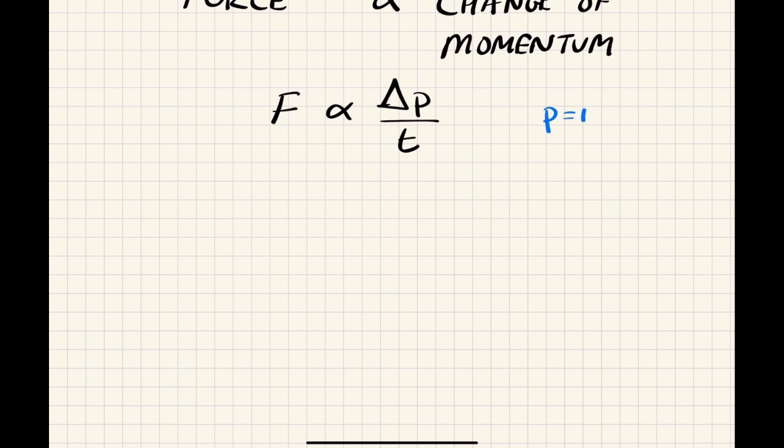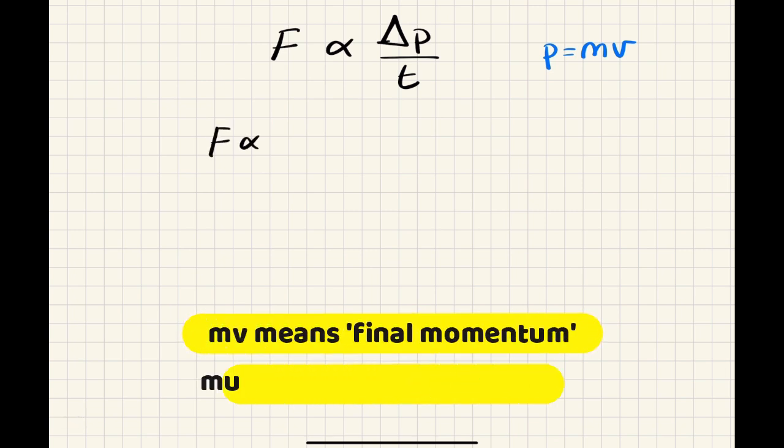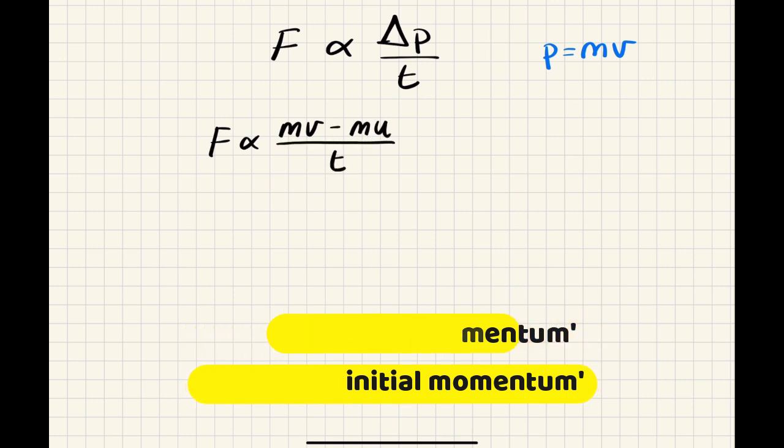So P, to remind ourselves, is mass by velocity. But we're saying change of momentum. So what we're going to say is the final momentum, which would be MV, minus the initial momentum, which would be MU, all over the time T.